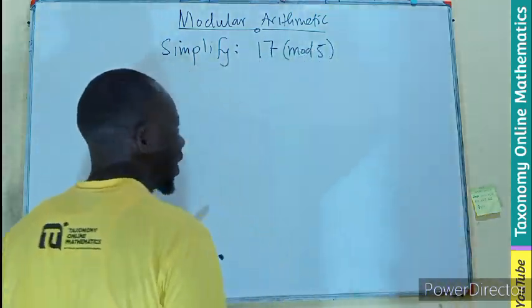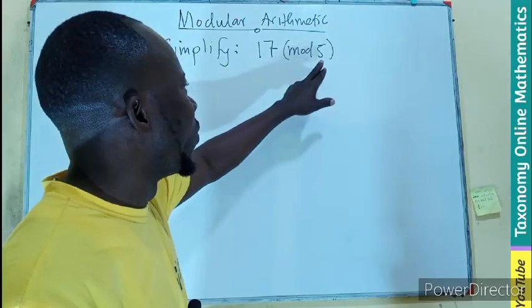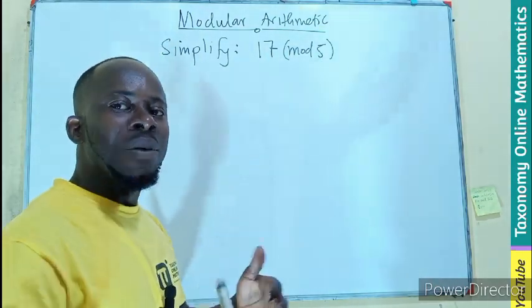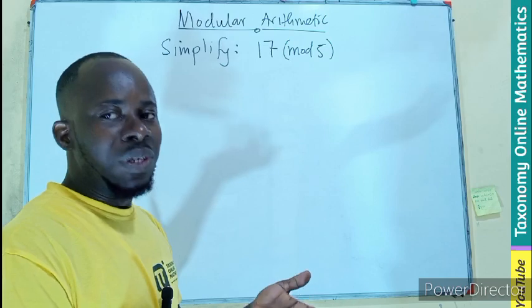So here we are only looking at how many times will 5 divide 17 and if it does, what will be the remainder after the division.